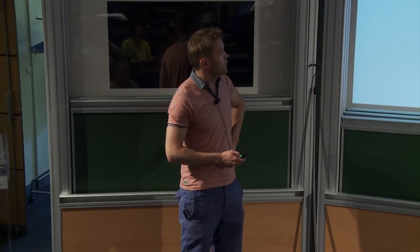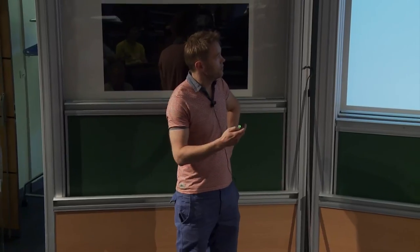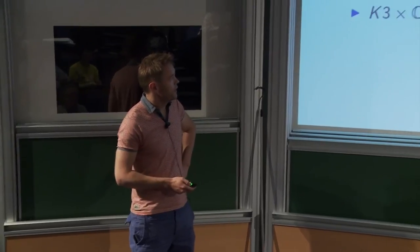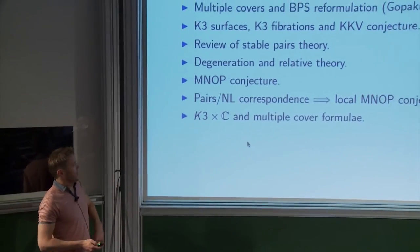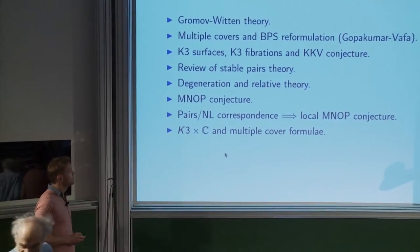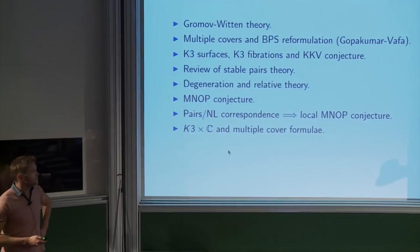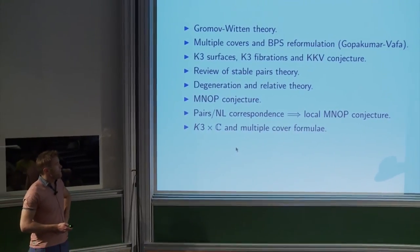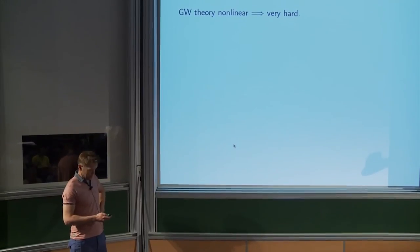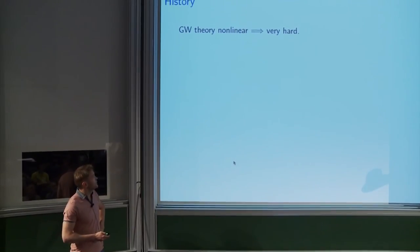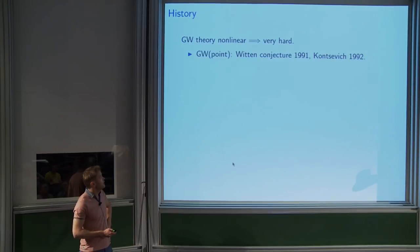The way we prove it is using a completely different theory called stable pair theory. I give a review of that and then explain the main tool, which is degeneration and relative theory, and the huge tool which is something called the MNOP conjecture. Gromov-Witten theory is nonlinear and so it's very hard.